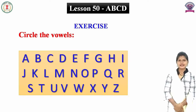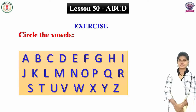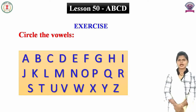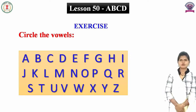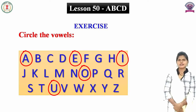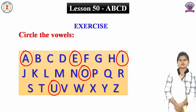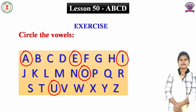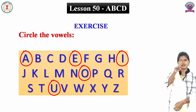Now this is our time for exercise. Circle the vowels. Yahan par A se lekar Z tak ke letter diye gaye hain. Unme se aapko vowels par circle karna hai. Circle means gola. Tau bataiye humne kaun kaun se vowels padhe the. Yes: A, E, I, O, U. Tau A, E, I, O, U par aapko kya karna hai? Circle lagana hai. Gola lagana hai.